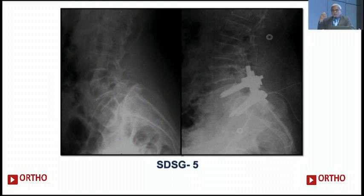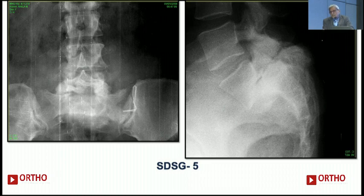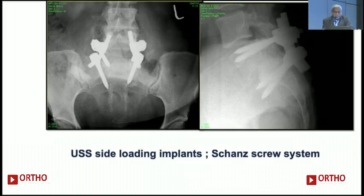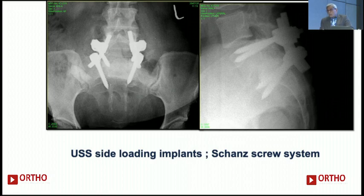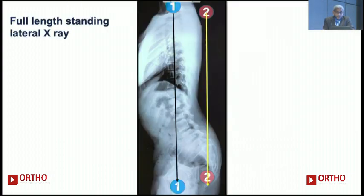For SDSG type 5, you generally prefer to do a short segment reduction and fixation. My personal preference is to use the USS2 instruments — the USS2, marketed by Synthes, is a side-opening implant with Shanscrew devices. The Shanscrew system allows very sequential tightening over 30 to 40 minutes, where you can achieve almost 100% reduction in a monosegmental fashion without going to L4 at all. The importance in all these high-grade listheses is the fusion — it's not so much for the reduction, but the fusion is more important.